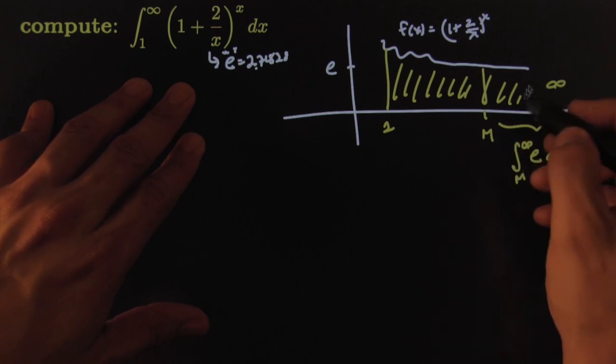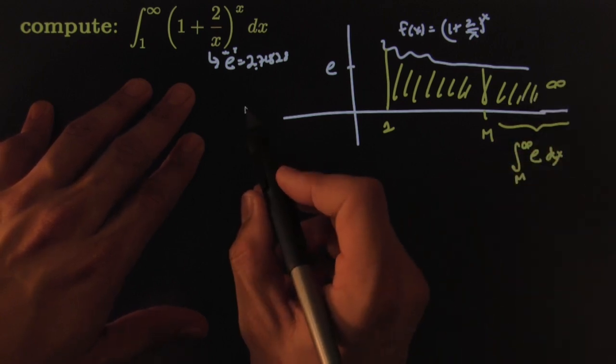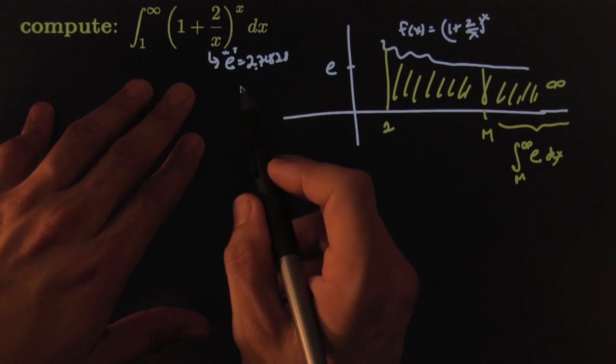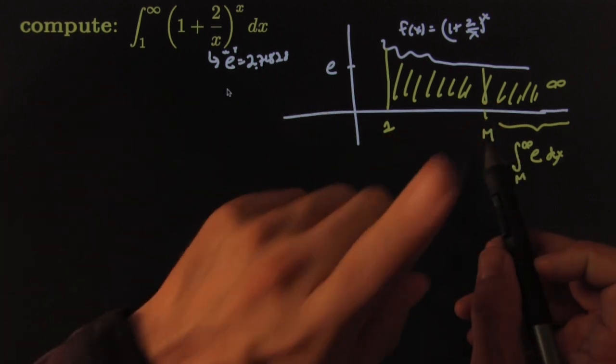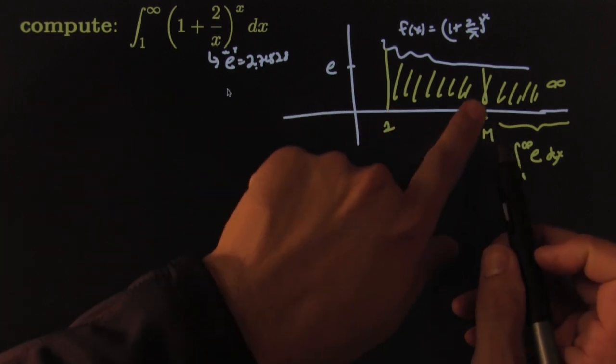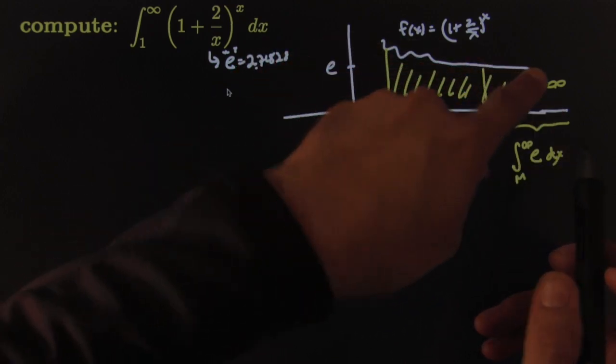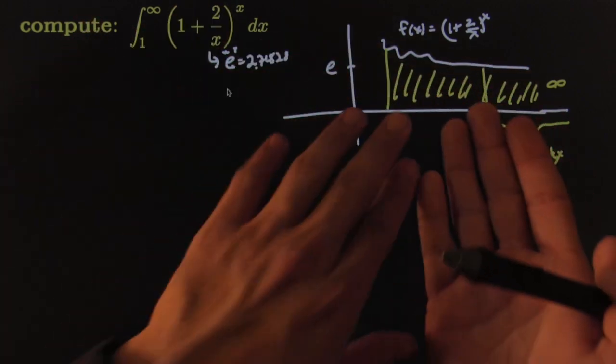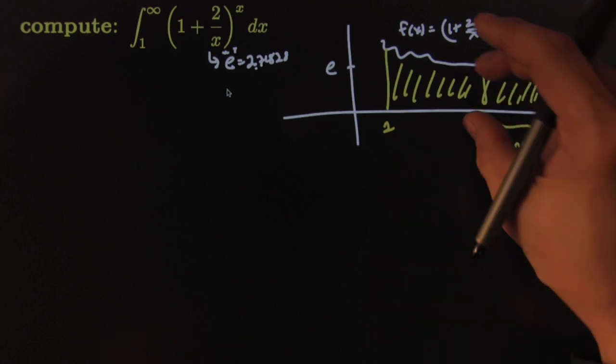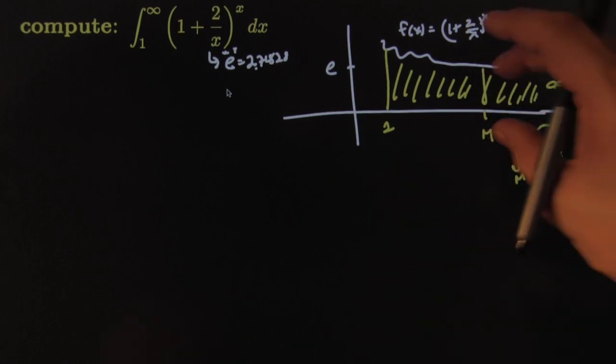Of course this is going to give you infinity. I made a comment like this earlier: if this function doesn't even go to zero, if it goes to some number like e, there is no hope of it ever being finite because you're adding an infinitely long area that's just e in height.